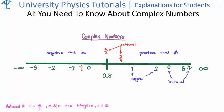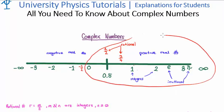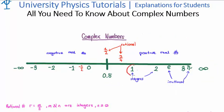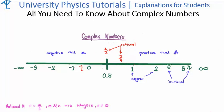Welcome back. We are all familiar with real numbers from our daily lives. So let's consider the positive real number line. In this we have the integers such as positive 1, 2, and 3. We also have rational numbers such as half and 3 quarters, but we also have irrational numbers such as e and pi.